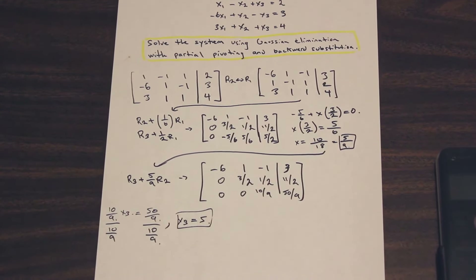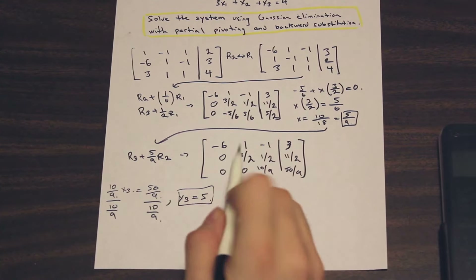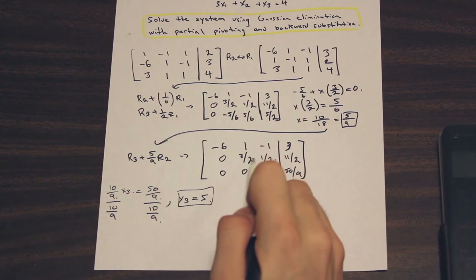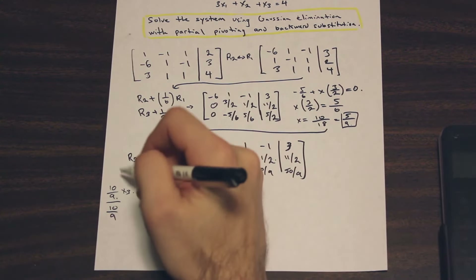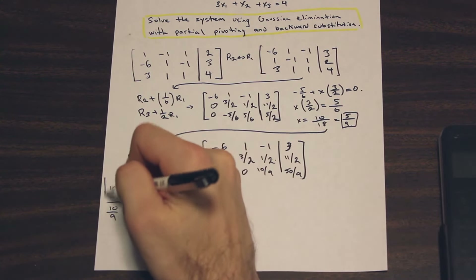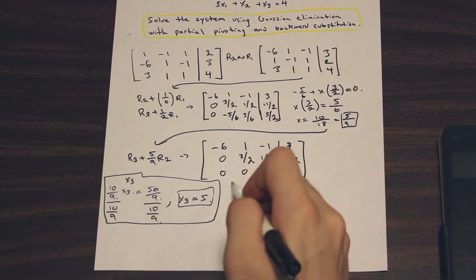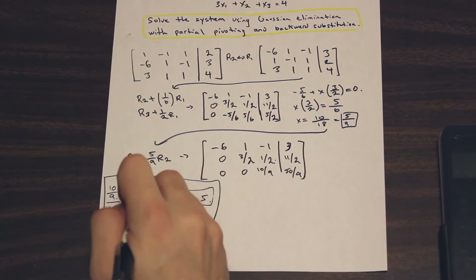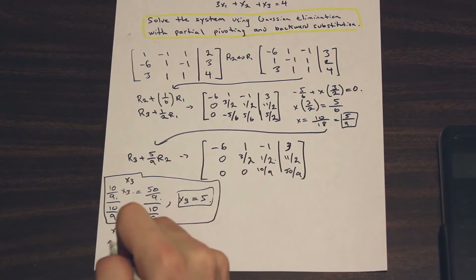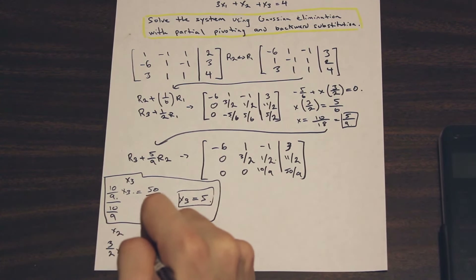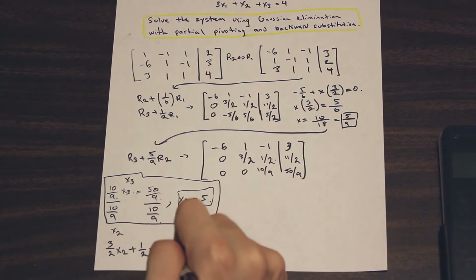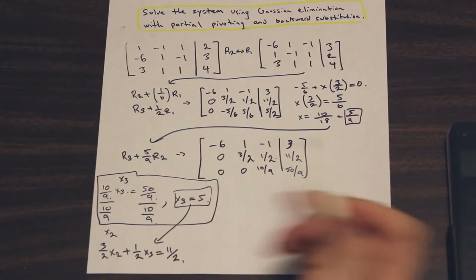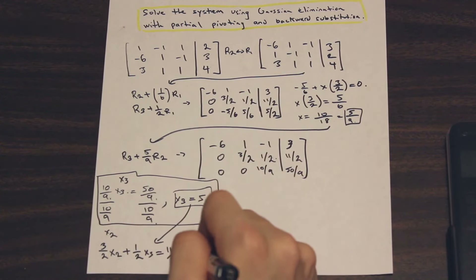Now we just need to solve for x2 and x1. Using the next row and substituting the known value x3, we have 3 over 2 times x2 plus 1 half times x3 equals 11 over 2. Plugging in x3 equals 5 and solving for x2, x2 is equal to 2.